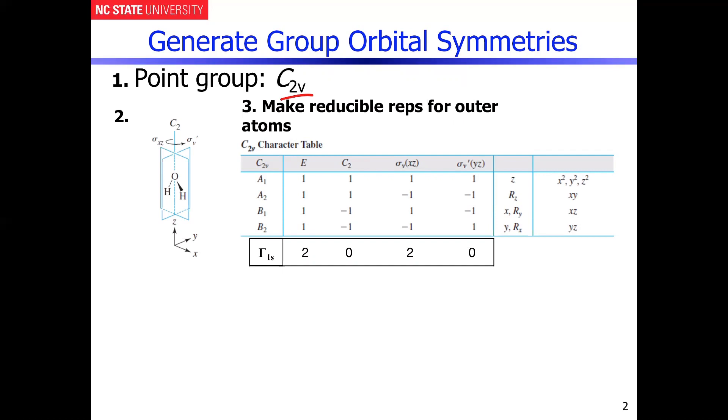And then recall that if the atoms shift during the operation the character is zero. If they remain in the same position each of the characters is going to be one. So obviously under the identity operation both of the hydrogen atoms stay fixed because it's the same as multiplying it by one.